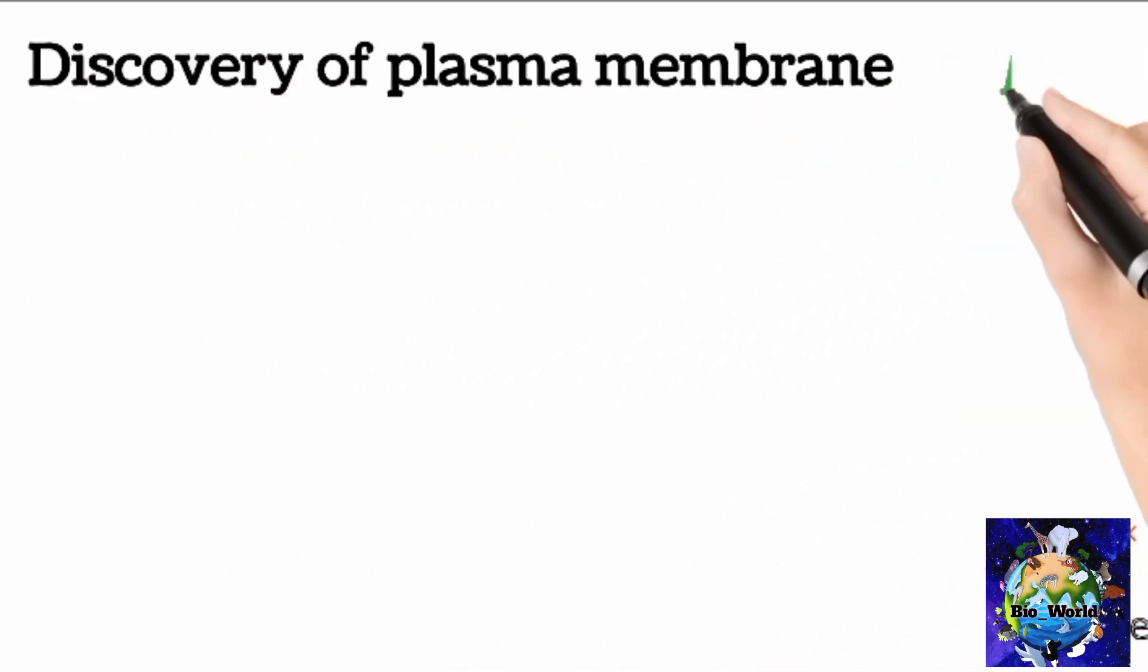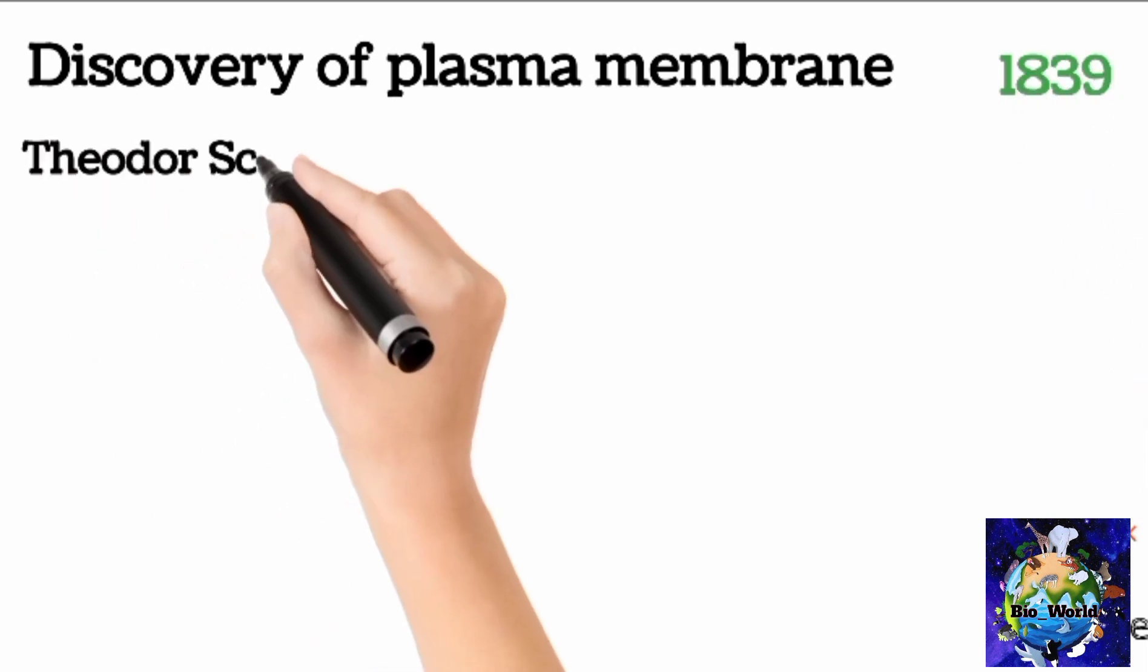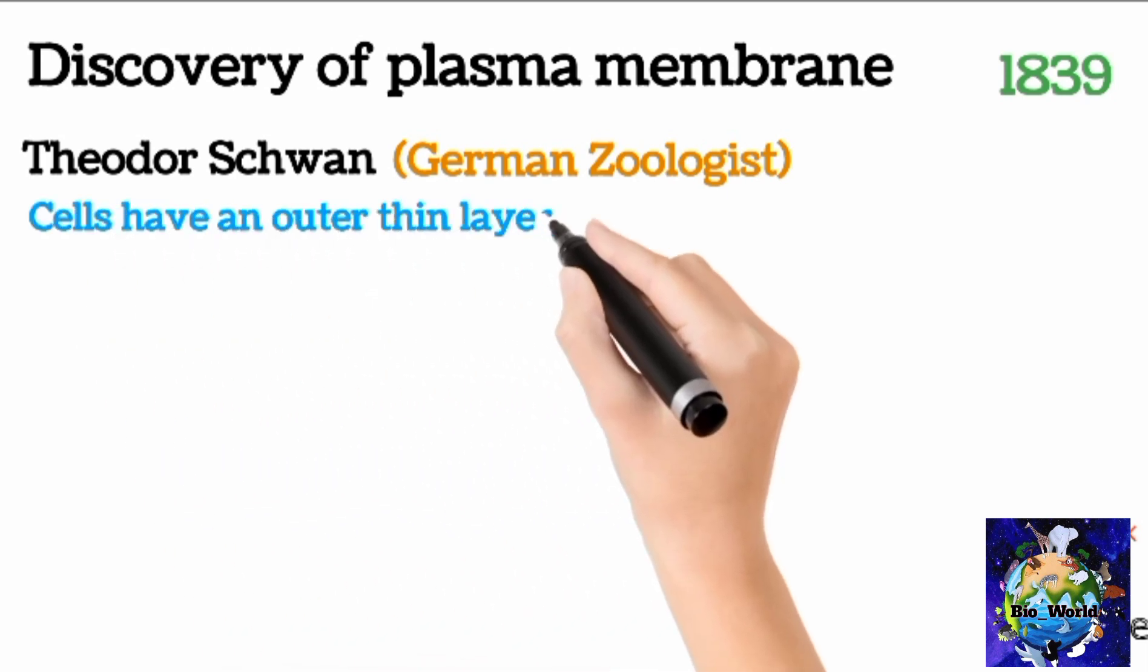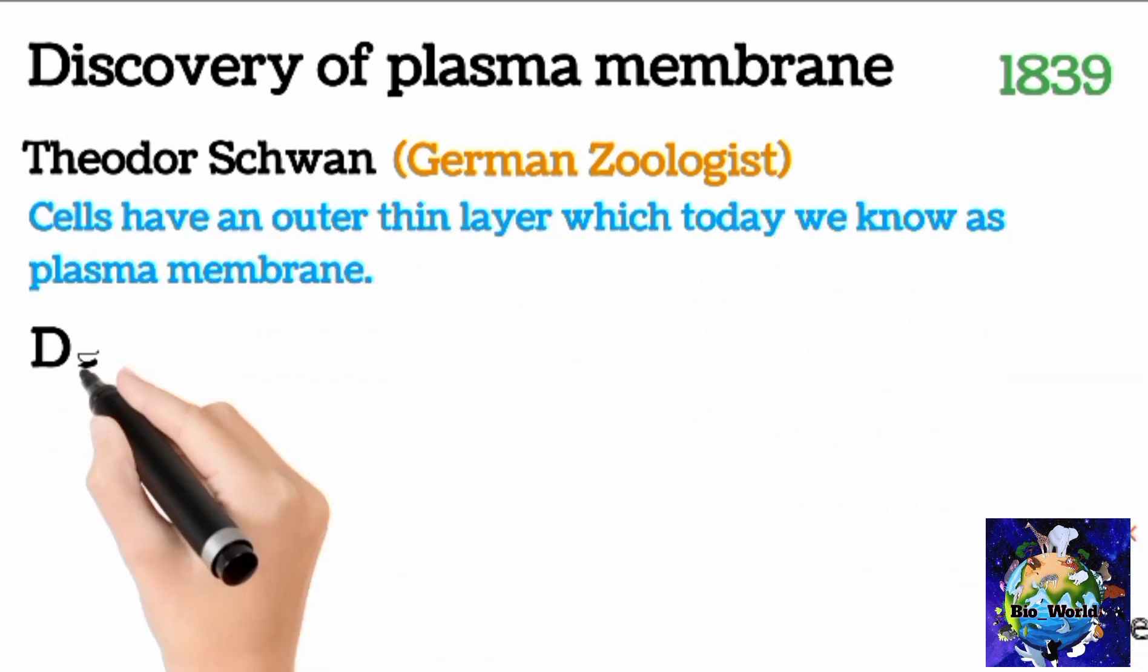Discovery of plasma membrane. In 1839, Theodor Schwann, who was a German zoologist, studied different types of animal cells and reported that cells have an outer thin layer, we know today as plasma membrane.